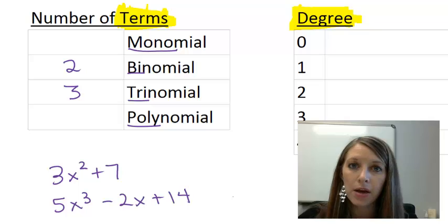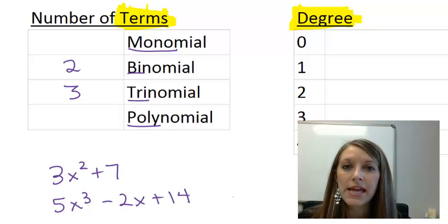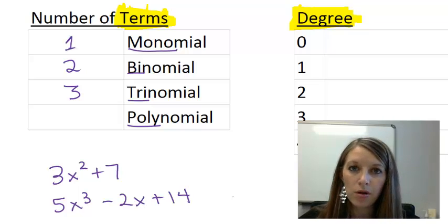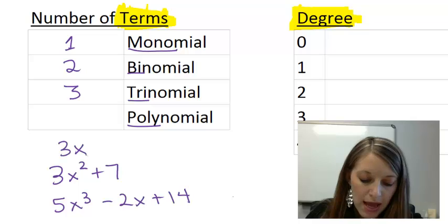The first one, mono, maybe you heard the saying mono e mono, which kind of translates into one-on-one. Or mono, the prefix, means one. So a monomial might be something like 3x.